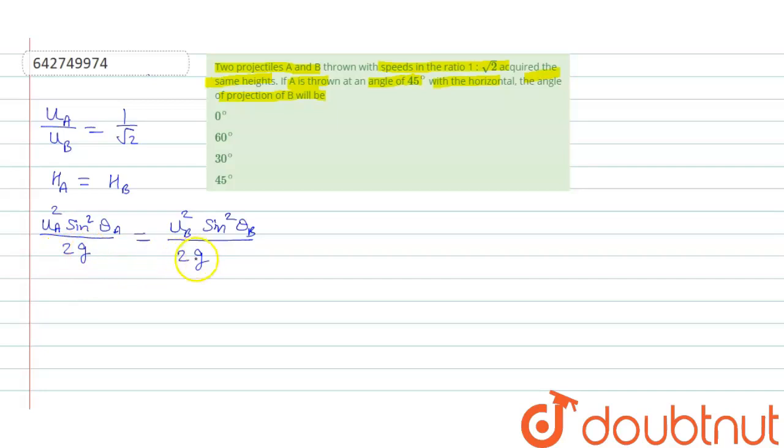So, we can cancel out 2g. We are left with U A square divided by U B square equal to sin square theta B divided by sin square theta A. We have also given theta A that is 45 degree.